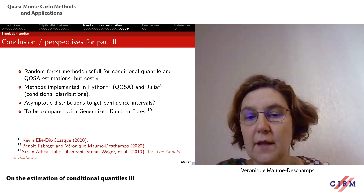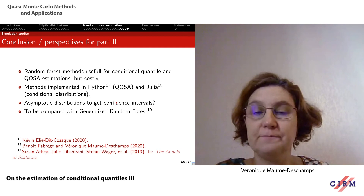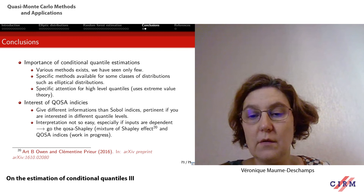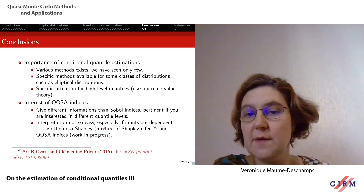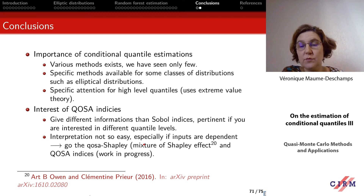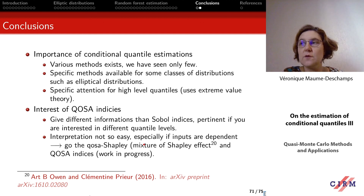We should also compare our method with generalized random forests proposed by Atleti, Tibshirani, and Wagner recently — they propose to change the splitting criterion in the construction of the trees. Some final conclusions: the estimation of conditional quantiles is important and there is much work to be done, more generally on estimation of conditional distributions. COSA indices are very interesting, but we have some interpretation issues: the sum of all COSA indices is not necessarily one — it could be less or greater than one, making interpretation at different levels challenging.